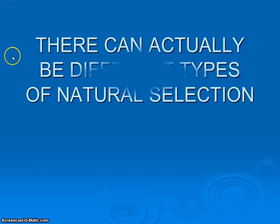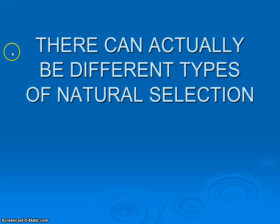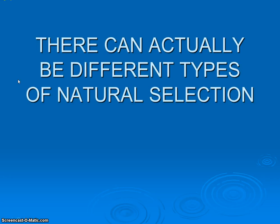Very quickly, we want to take a look at three types of natural selection that evolutionary biologists have come up with. Because if we start to look at populations, we're going to see that based on environmental conditions, different things can happen within certain populations.